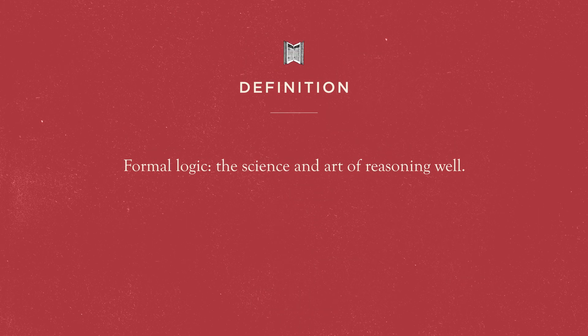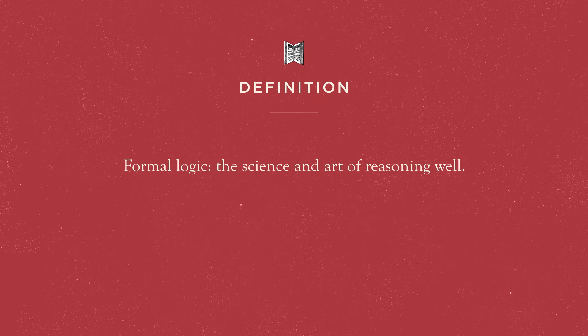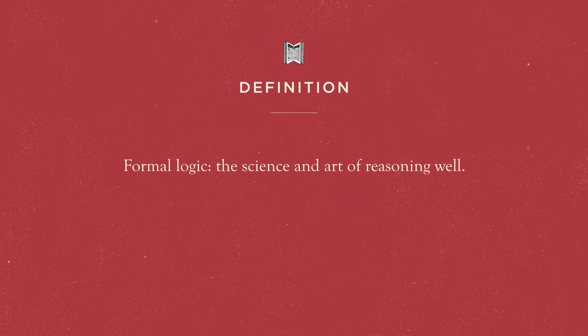Formal logic is the science and art of reasoning well — the science and art that teaches us the standards of how to reason, how to draw conclusions from other information. Formal logic is a science because, through analyzing or observing the mind as it reasons, we determine particular rules that we follow when we reason. As a science, we categorize those rules and name the parts of logic. We're analyzing something in nature and coming up with standards that people follow.